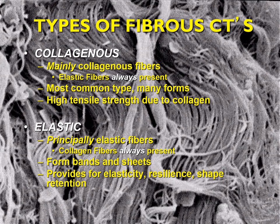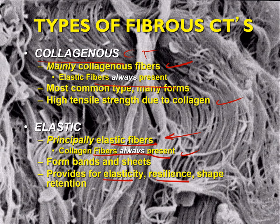In collagenous connective tissue, collagen fiber is mainly present but some elastic fibers are also present. This is the most common type and forms tissue with high tensile strength due to the collagen fiber. In elastic connective tissue, elastic fibers are the predominant component, but collagen fibers are still present. It typically forms bundles, bands, and sheets and is very important in providing elasticity, resilience, and shape retention.